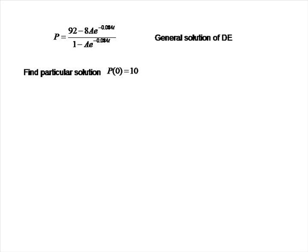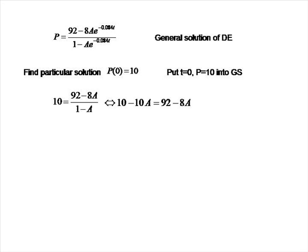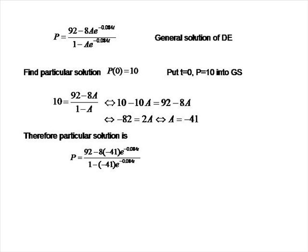Now we find the particular solution satisfying p(0) = 10, i.e., we start with 10 grizzly bears. Substituting t equals 0 and p equals 10 into the general solution gives 10 equals (92 minus 8A) over (1 minus A). Multiplying both sides by (1 minus A): 10 minus 10A equals 92 minus 8A, so A equals minus 41. Substituting back, the particular solution is p equals (92 plus 328·e^(−0.084t)) over (1 plus 41·e^(−0.084t)).